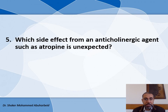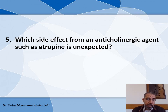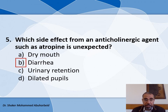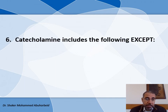The fifth question: Which side effect from an anticholinergic agent such as Atropine is unexpected? Here we will choose the answer that is unexpected — that is false. The choices are: A) Dry mouth, B) Diarrhea, C) Urinary retention, and D) Dilated pupils. The only exception is diarrhea, because Atropine causes constipation, not diarrhea.